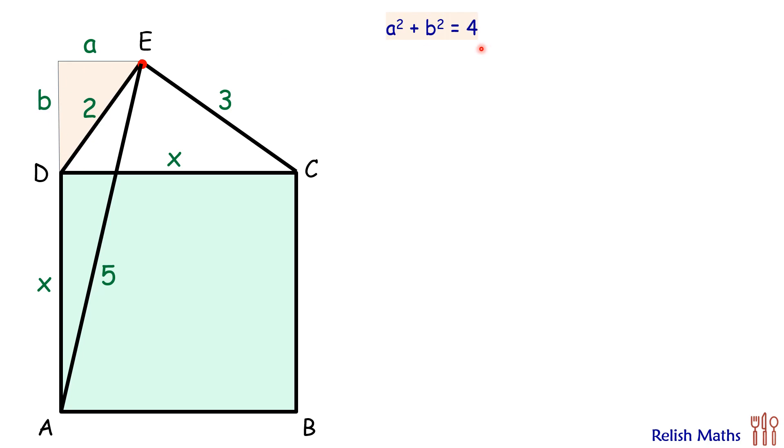Same way, we will draw one more right angle triangle here with EC as hypotenuse. This full length is x, so here this length will be x minus a, and this height of the triangle will be same as b. Again applying Pythagorean theorem, we'll get (x - a)² + b² = 3².